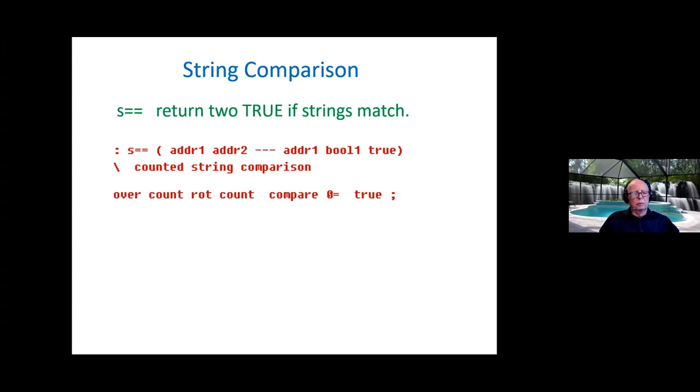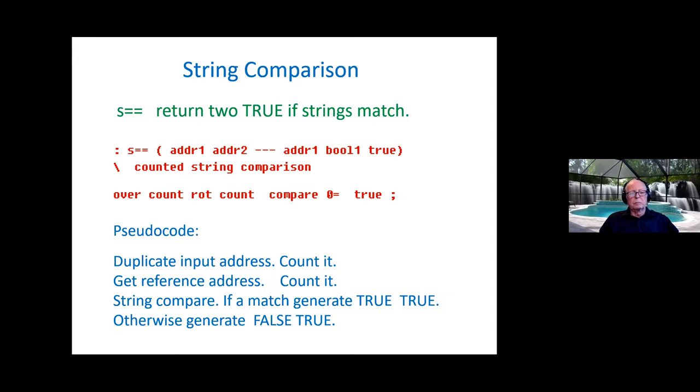So I developed the little string comparison word, S equal equal. S equal equal takes two string addresses. These are counted strings. So the address is given as the count address, and that can be expanded to give the address of the text and the count. So the input is two addresses. The output is address one preserved, and then a Boolean which indicates a match or not match, and then true. So it's pretty simple code, amazingly dense. The over duplicates the address one, counts it. The root count duplicates address two. They're compared. If they're equal, you get a true, and a true is forced. So if they match, you get a true, true. If they do not match, you end up with a false, true.